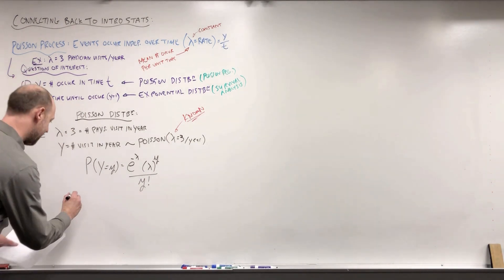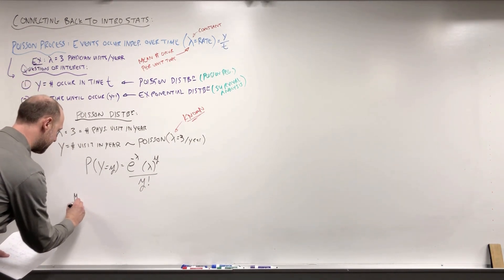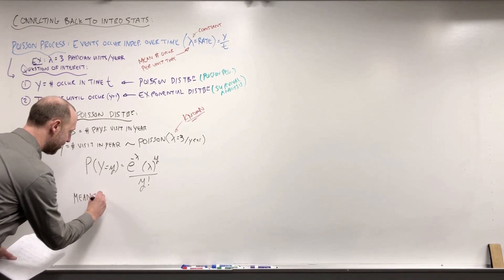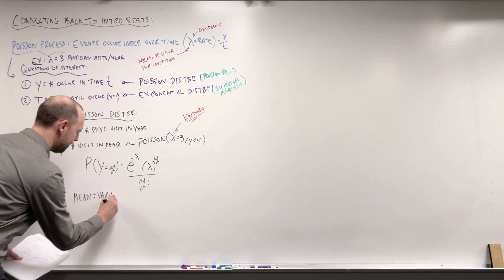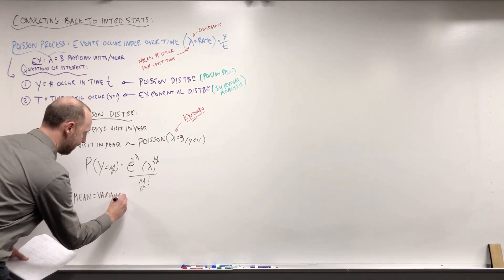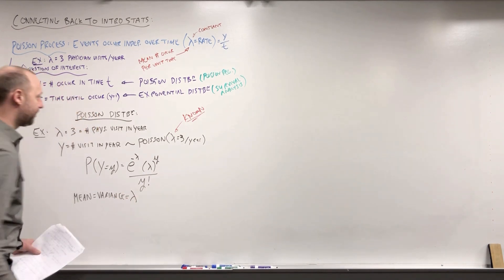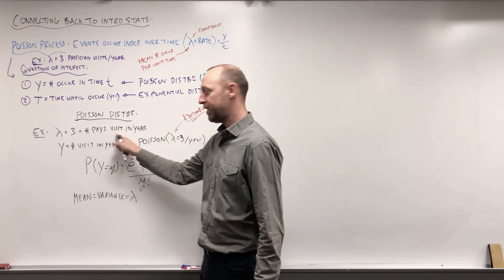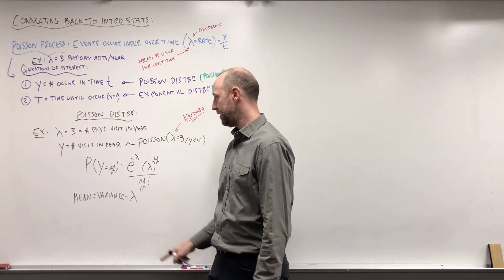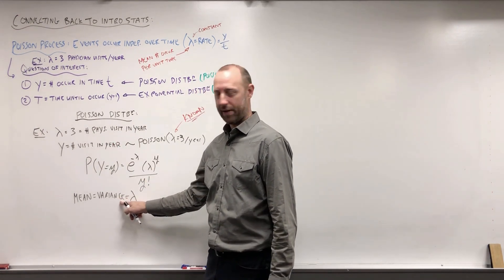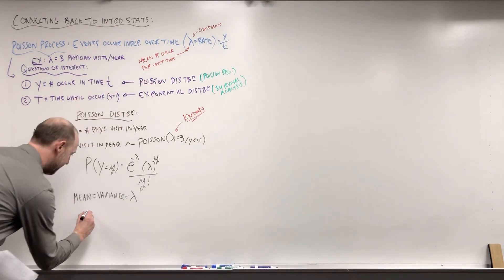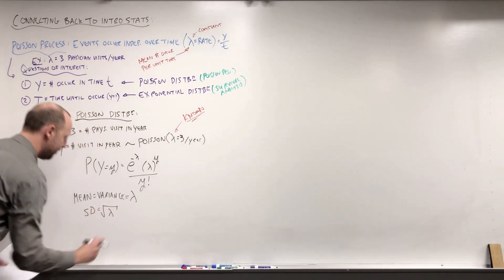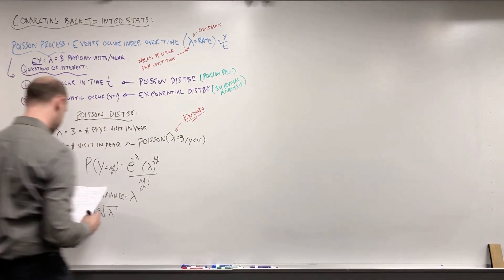The Poisson distribution has a few features worth mentioning. The mean is also equal to the variance, which is equal to the rate. So if on average someone goes three times per year, that's the mean and the variance is also three. The standard deviation for the Poisson is the square root of lambda, the square root of the rate.